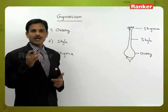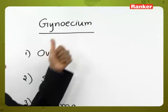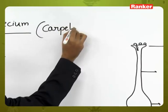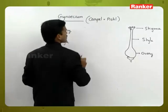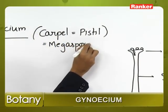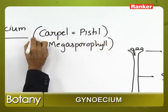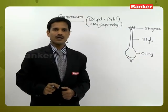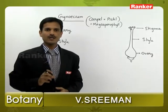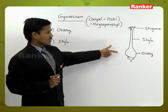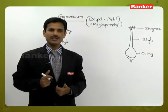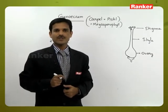Gynoecium is the female reproductive organ — the innermost and last fourth whorl of the flower. It has three parts: ovary, style, and stigma. It has one or more carpels; sometimes they are free (Apocarpous condition) and sometimes they are fused (Syncarpous condition). Each carpel is also called a pistil, and it is equivalent to the megasporophyll of gymnosperms.